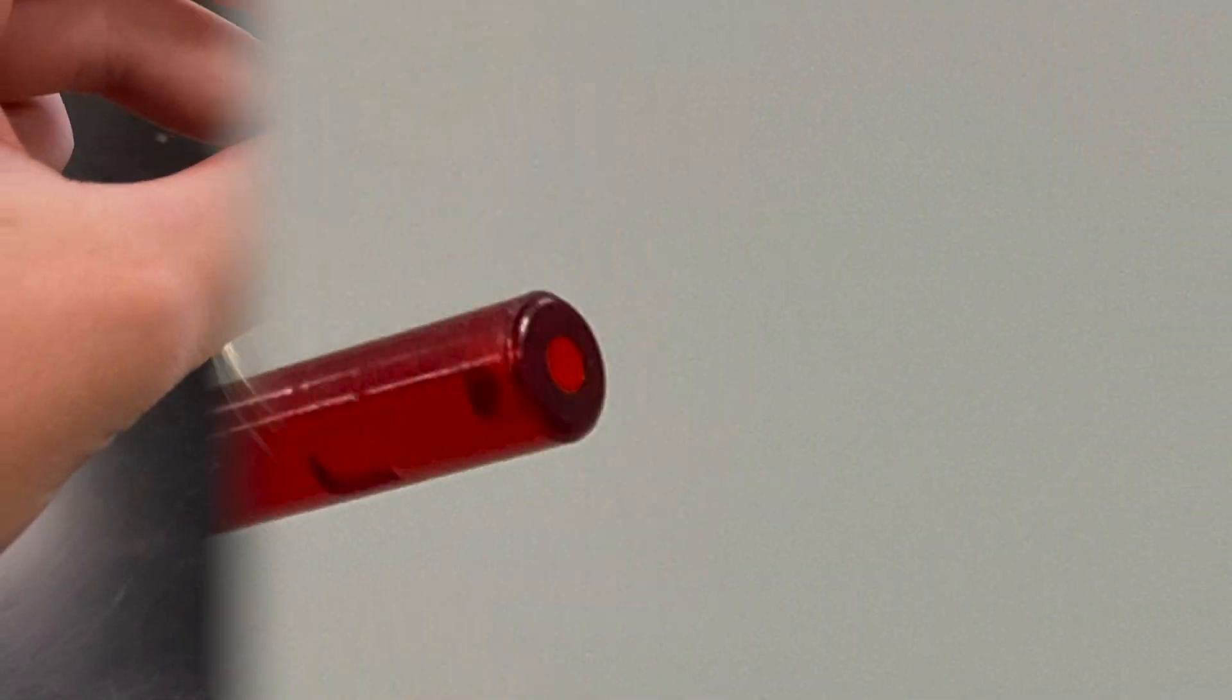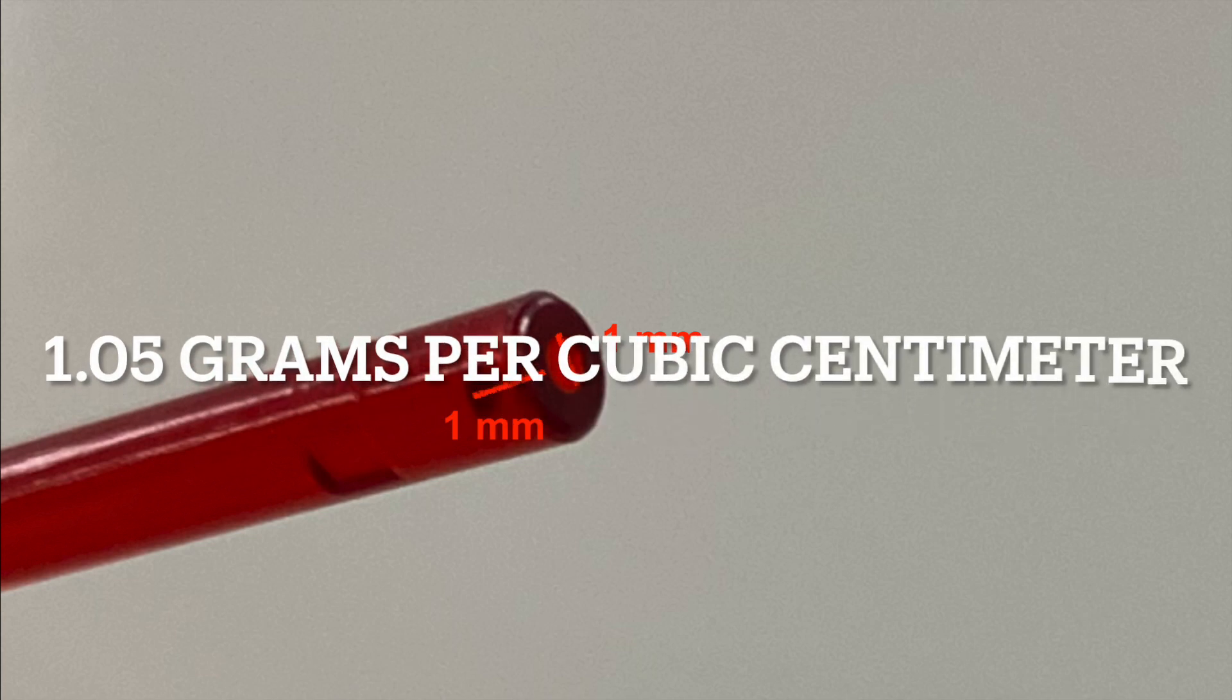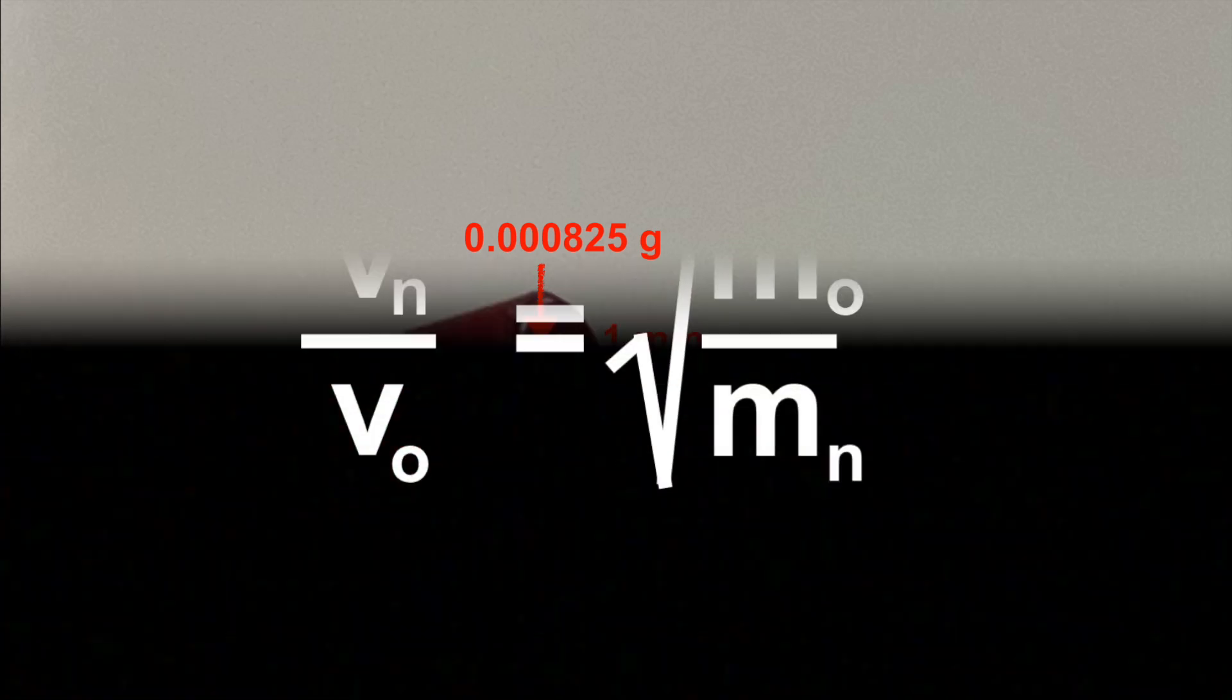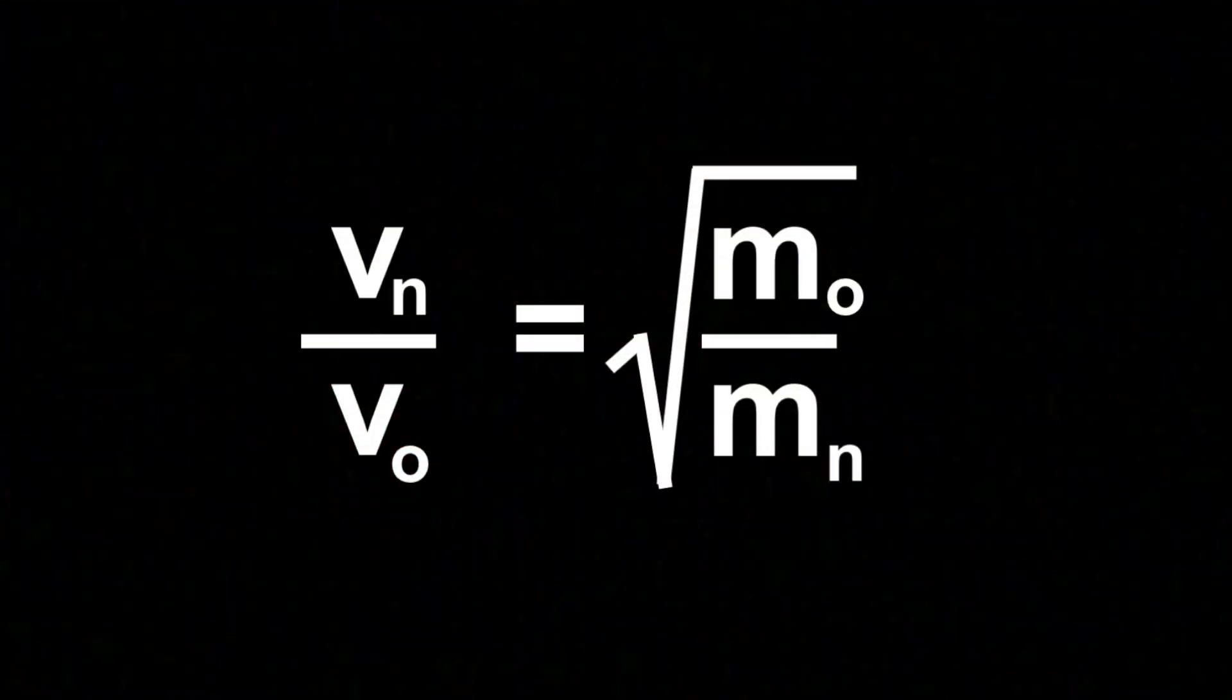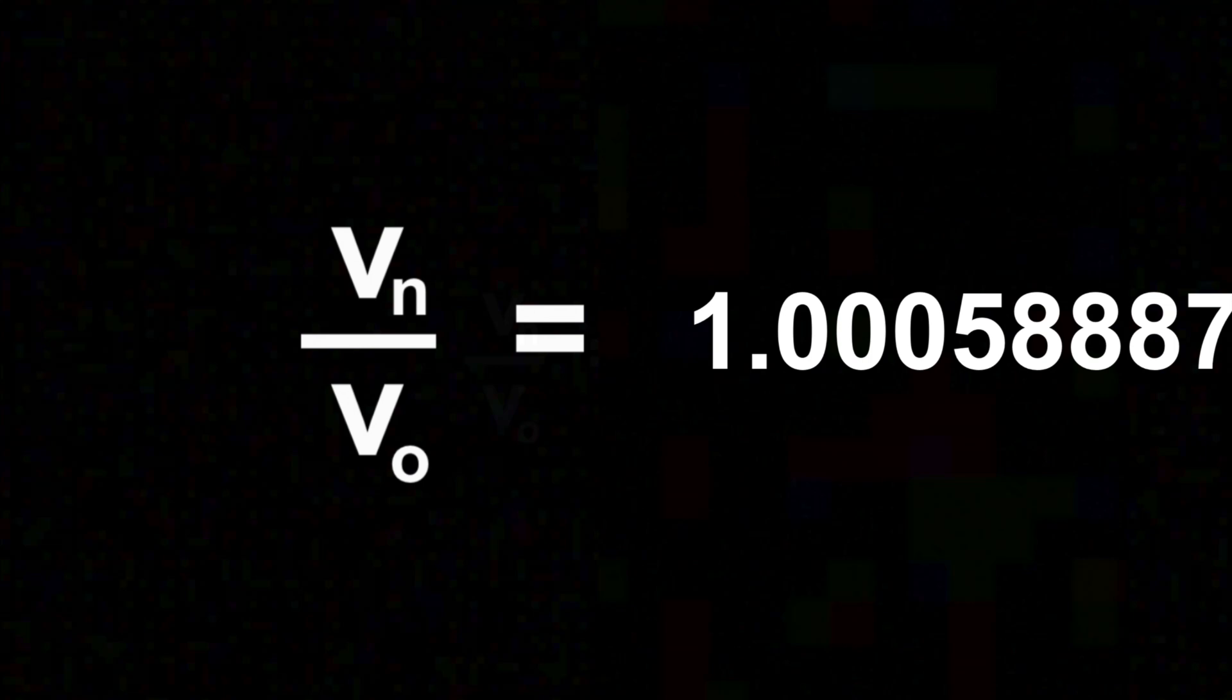So this hole is one millimeter in diameter and about one millimeter deep. Since Lego is 1.05 grams per cubic centimeter, that means that if this little hole was filled in, there would be 0.000825 extra grams on the spring loaded shooter. If we go back to our equation and plug in some numbers, we'll find that the new velocity is about 1.0005887 something, something, something, something times bigger than the old velocity. So it'll go about 0.0588% farther.